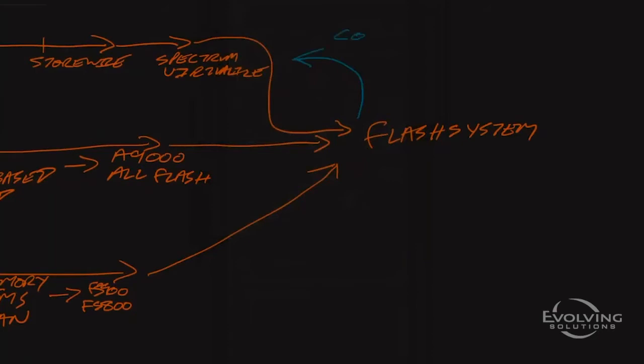And as part of bringing things together in the Flash System family, they took things from each of the brands. So from the Spectrum Virtualize family, they took the code base. And one thing that Spectrum Virtualize had was cloud support that the other three didn't have as well developed. Cloud support in terms of support for Azure to run this code in Azure, AWS, and Google coming soon.